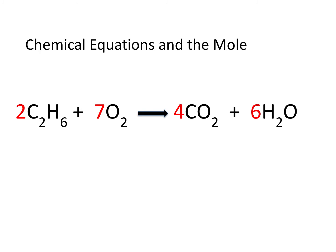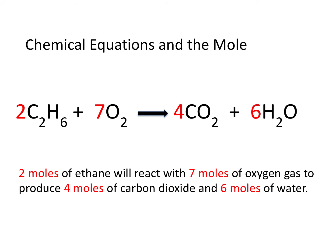One of the things we'll also be doing is using chemical equations. Here is a typical balanced chemical equation — a combustion reaction. In the past, you've said two molecules of ethane react with seven molecules of oxygen gas to produce four molecules of carbon dioxide and six molecules of water. But from now on, think in terms of moles: two moles of ethane react with seven moles of oxygen gas to produce four moles of carbon dioxide and six moles of water. When we look at these coefficients — the red numbers in front of the formulas — we're going to think about moles.